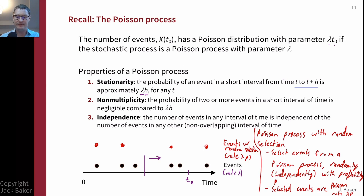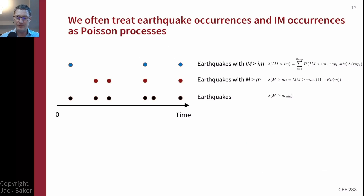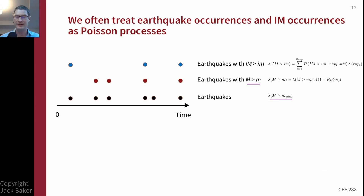This extension is relevant for the next slide. Our earthquakes form the basic Poisson process occurring at rate lambda — for instance, all earthquakes greater than minimum magnitude m_min have rate lambda(M ≥ m_min). Some of those earthquakes will have magnitude greater than some user-specified m, like greater than 6 or 7. That's a Poisson process with random selection: the original lambda(M ≥ m_min) multiplied by p — the probability a given event has magnitude greater than m, computed as 1 minus the CDF. That random selection of larger magnitude events is still a Poisson process.